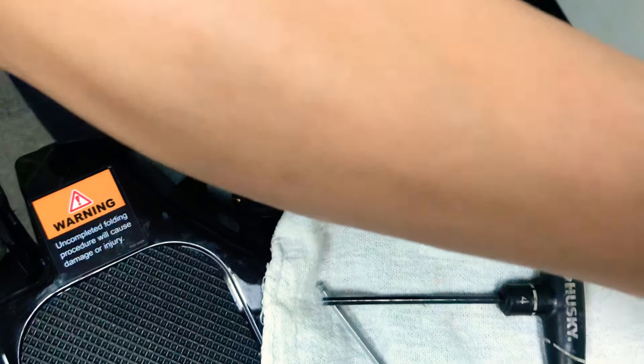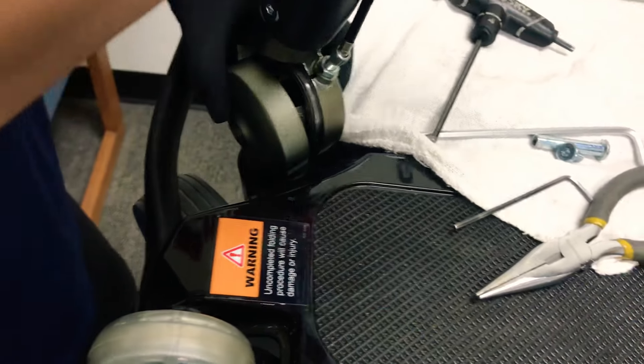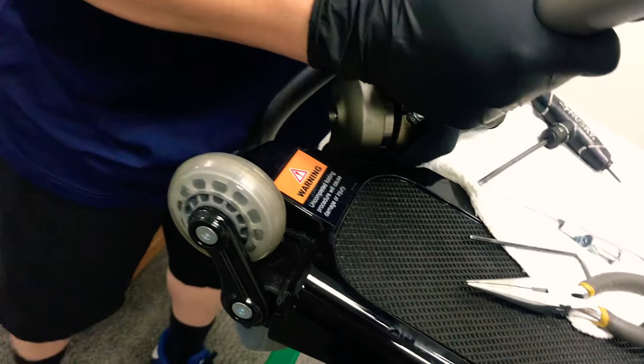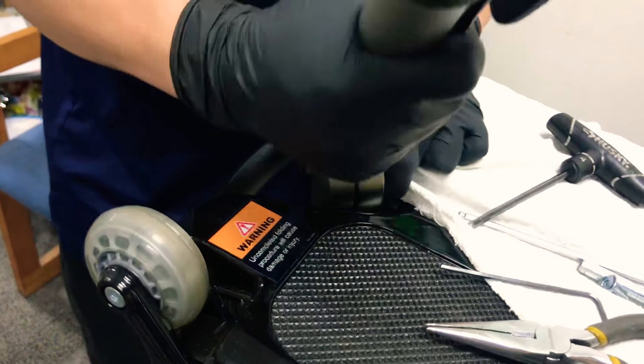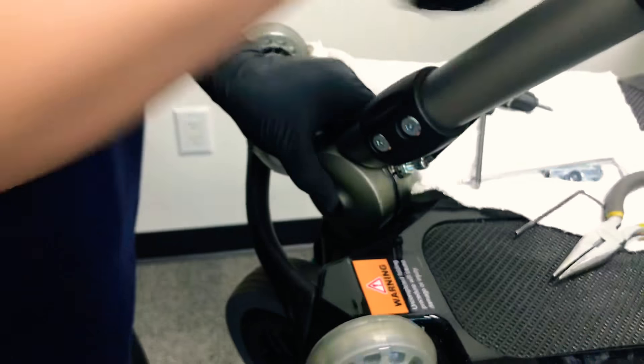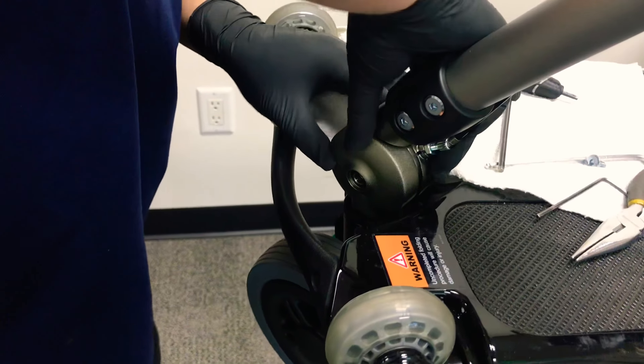Now you want to put it back inside the handlebar joint base. This is the tricky part - you want to get it at an angle and squeeze it in there. Like I said, it will go in there but it's a little difficult, so it takes a little bit of work.